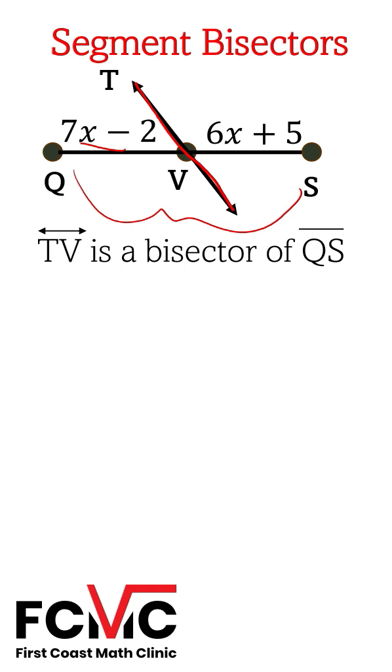So first off, if Tv is bisecting Qs, we know that V is the midpoint, so we know that these two segments, Qv and Vs, are congruent to each other.